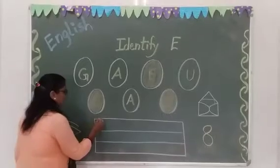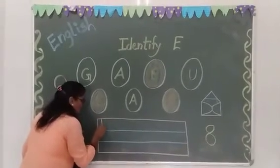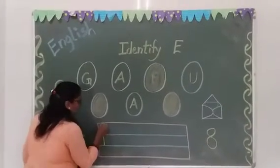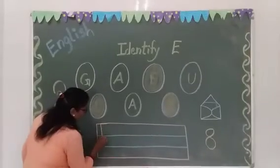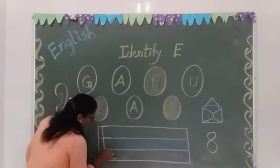So let's check out which way we have to write the letter E. First of all, standing line. Then sleeping line, sleeping line, and sleeping line.